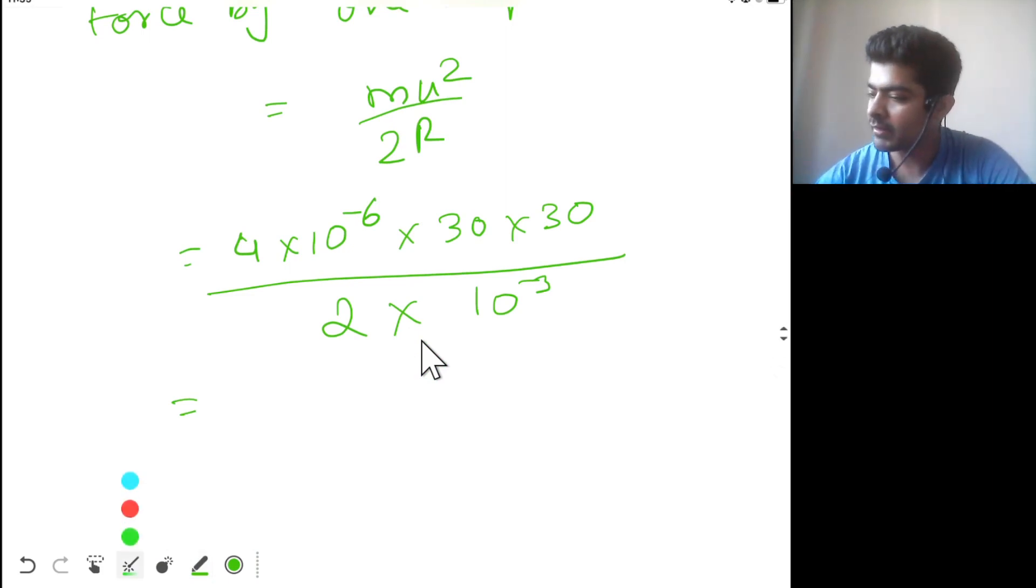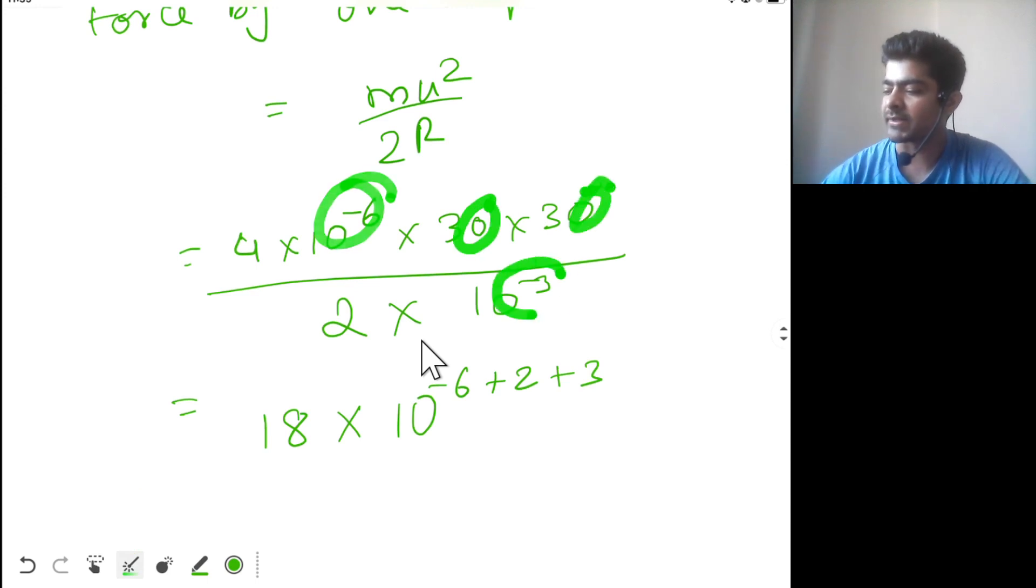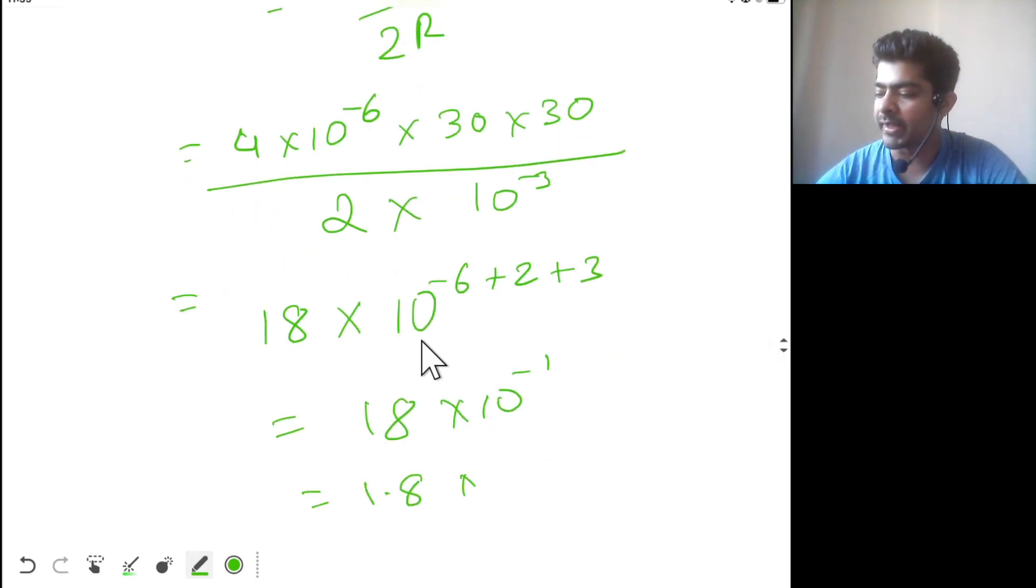3 times 3 is 9, 9 times 2 is 18 into 10 power minus 6 plus 2 plus 3. We get this to be equal to 1.8 newton. This is the force applied by a single drop on the head of the man.